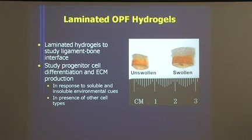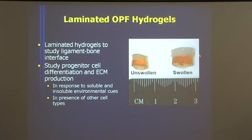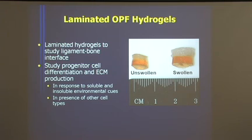Another advantage of this system is that it has the ability to be laminated. You can add a second layer before the first layer has completely cross-linked, and you can get structures that are biphasic or multiple-phasic. Even after swelling, there's a strong interface — these layers are covalently bonded and don't come apart. This might be a very useful system to recreate that zonal organization at the ligament-bone insertion, and our idea is to encapsulate progenitor cells or stem cells within these modular constructs.